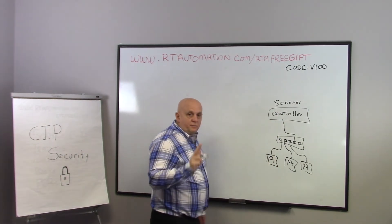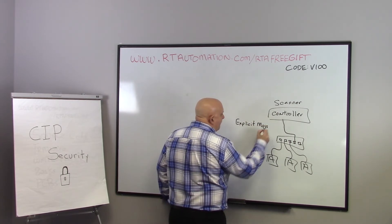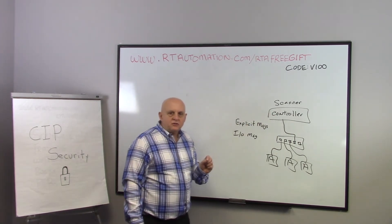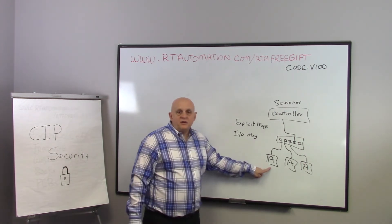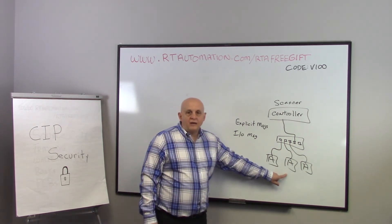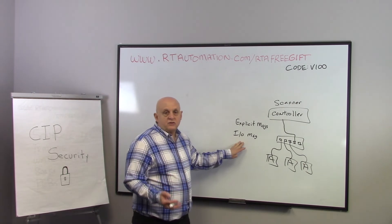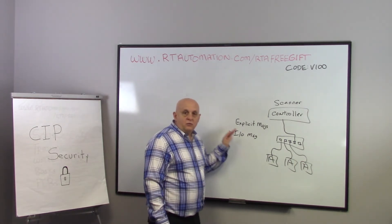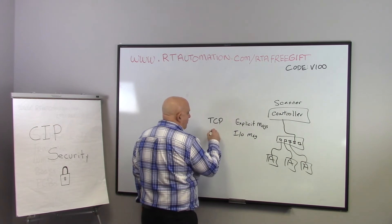There are two kinds of messages that go across that network: explicit messages and IO messages. The controller or PC sends an explicit message when reading or sending information — for example, how many cycles has this valve completed, or telling a drive to change the ramp-up time from 10 seconds to 12 seconds. An IO message is inputs from adapters going back to the controller and outputs from the controller back to the adapter. EtherNet/IP uses two different transports: explicit messages use TCP and IO messages use UDP.